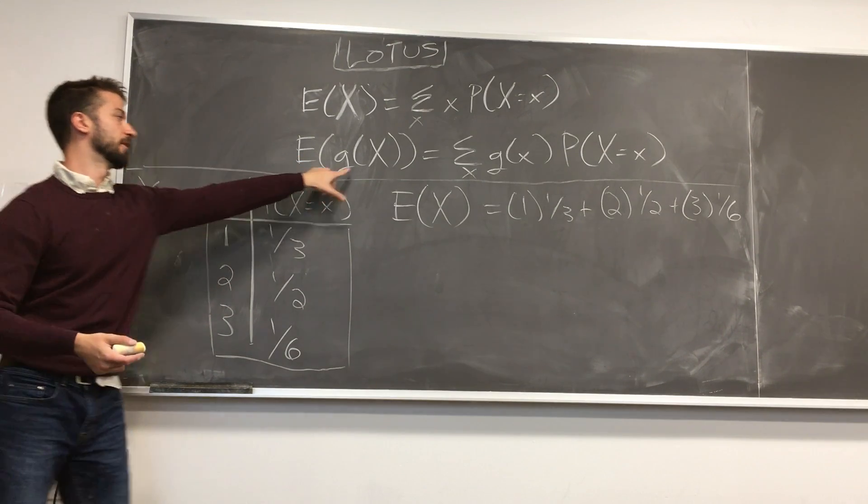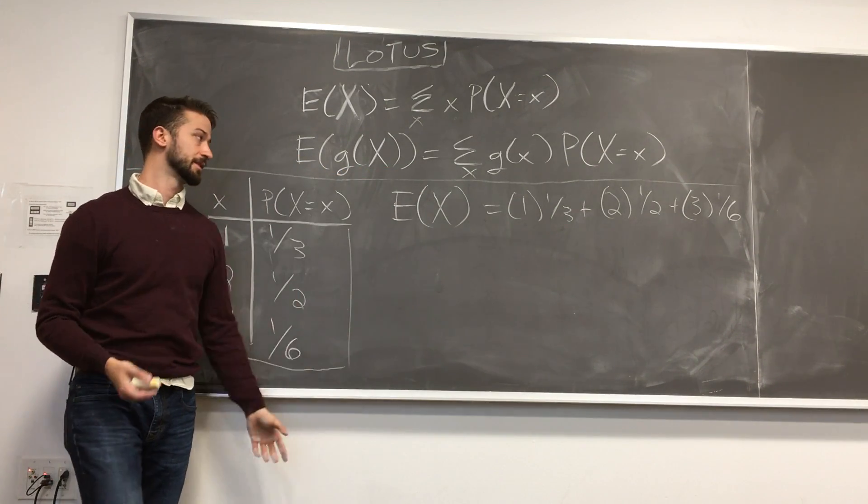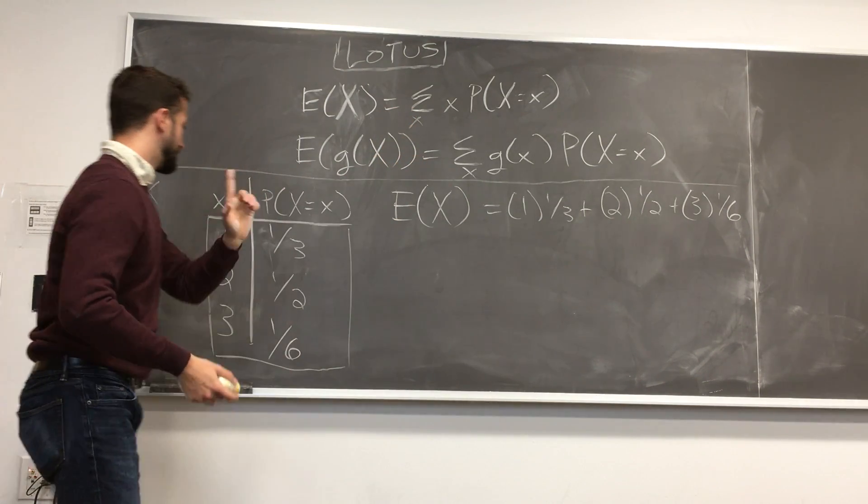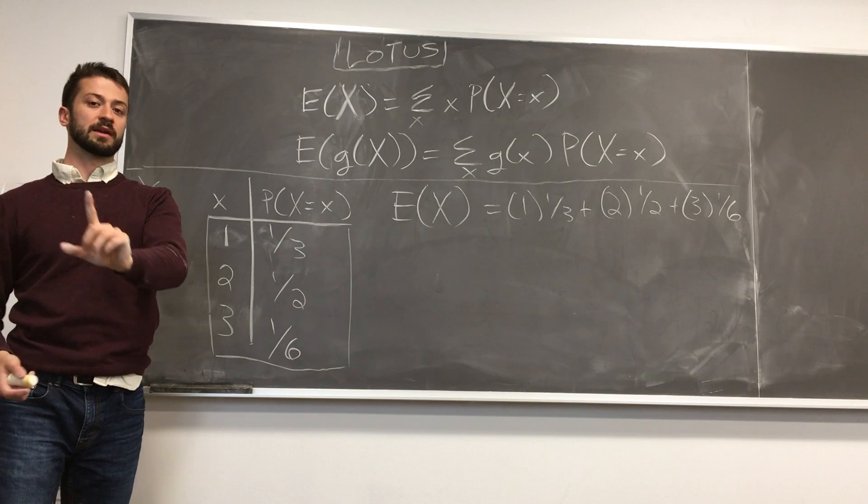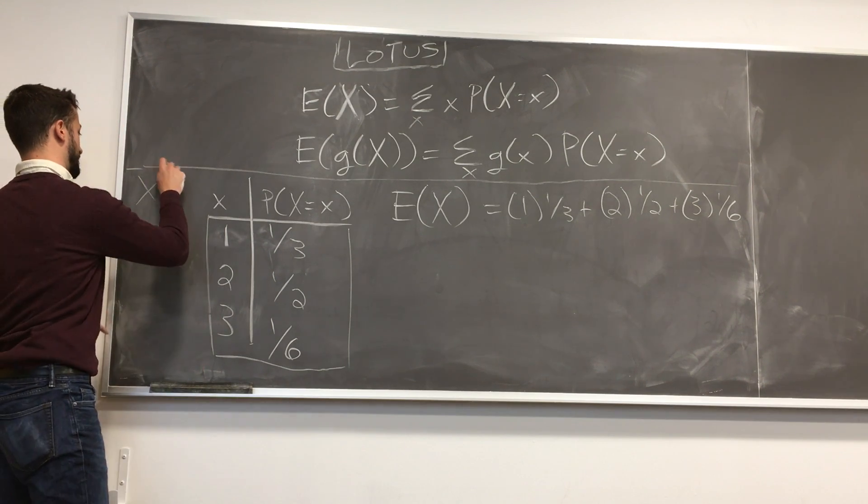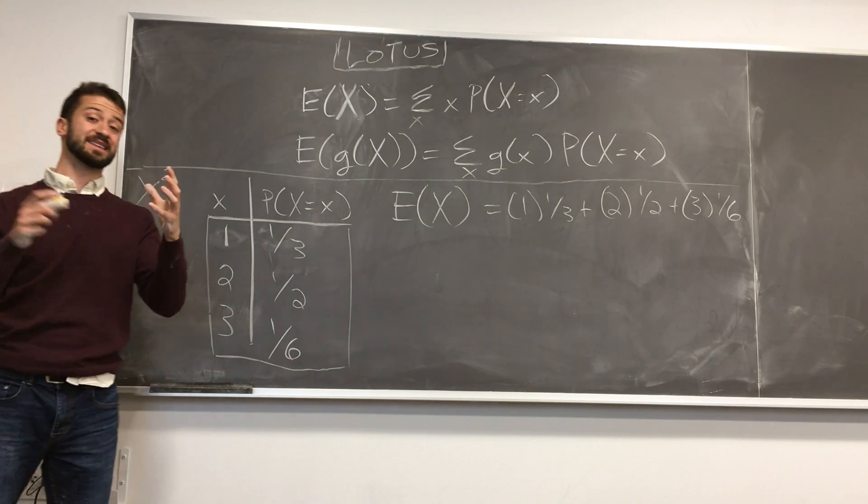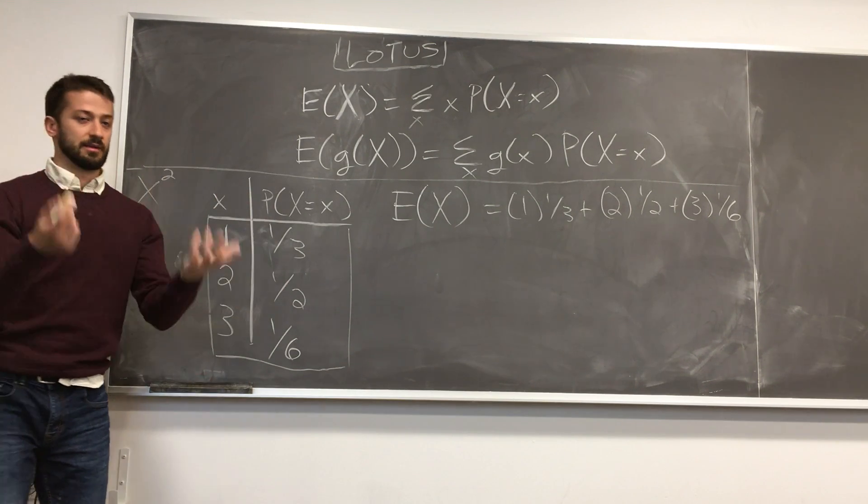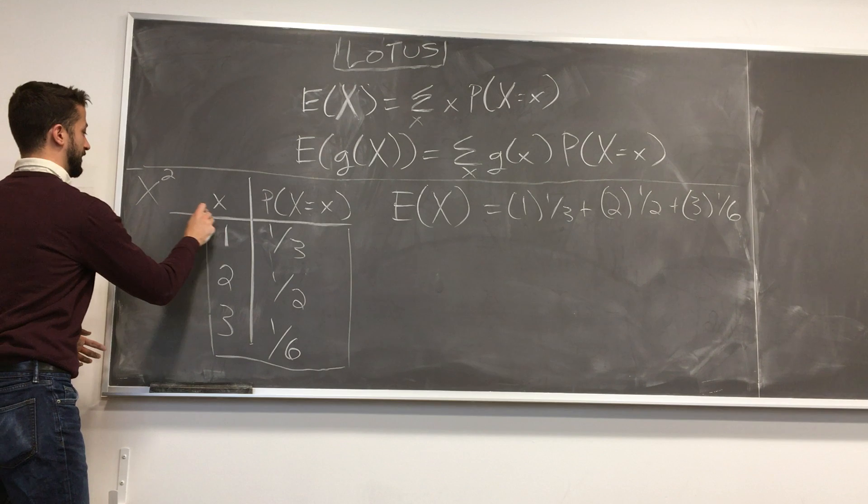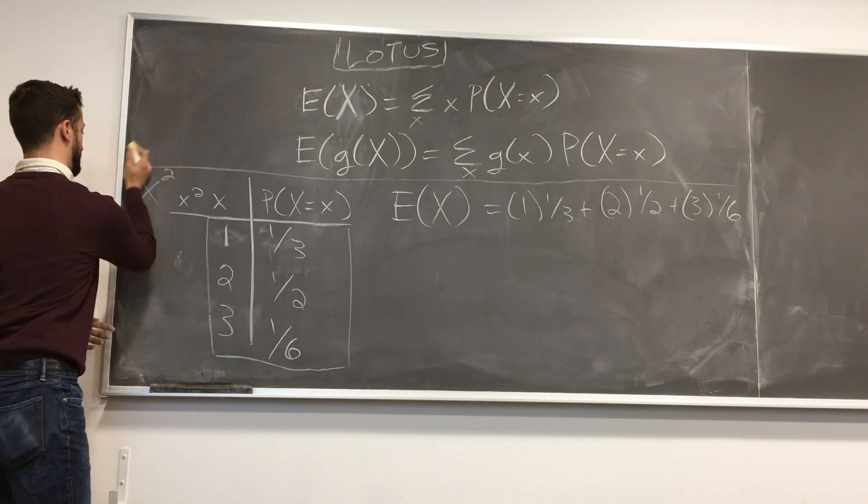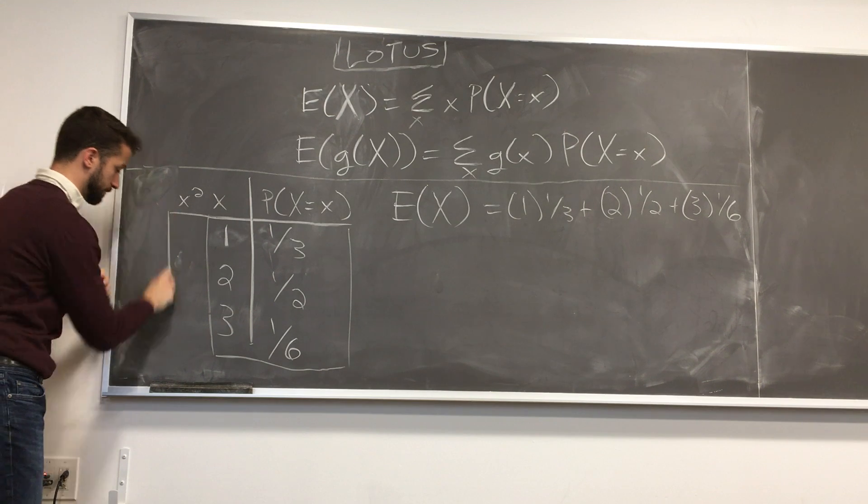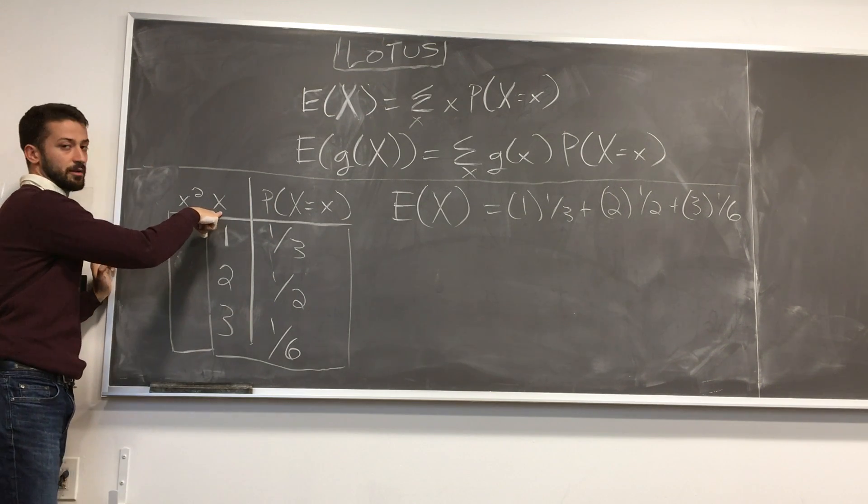The trickier one is this guy, the function of big x, right? So this, you start to see the light on this one, maybe not on this one yet. Let's imagine if we created a new random variable. So we have x, and now we're going to consider x squared, right? So x squared is clearly the value that x takes on, and we square that. So we kind of expand our table here. We have x squared over here.